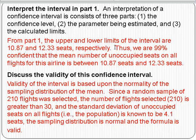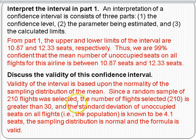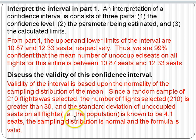For validity, we check against the conditions for the sampling distribution of the mean. We have a random sample of 210 flights; 210 is greater than 30; and the standard deviation of unoccupied seats on all flights — the population standard deviation — is known to be 4.1. Because of that, the sampling distribution is normal and the formula is valid.